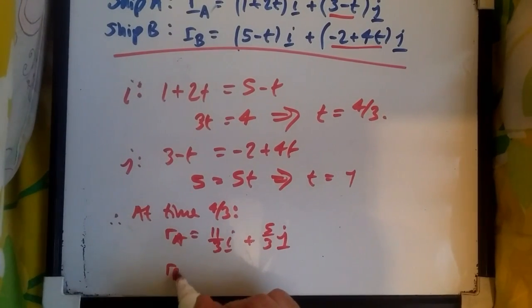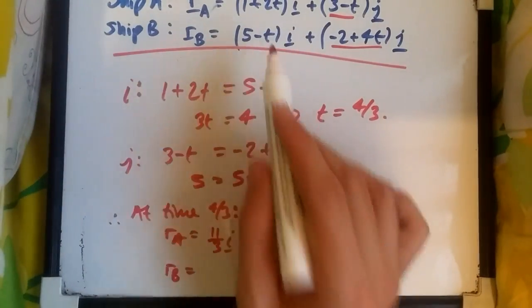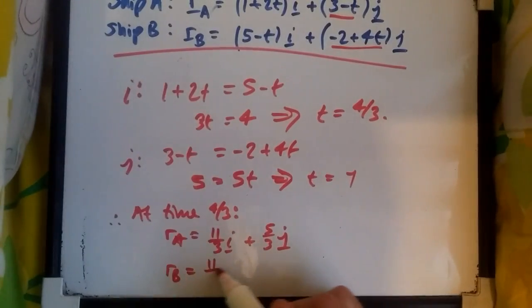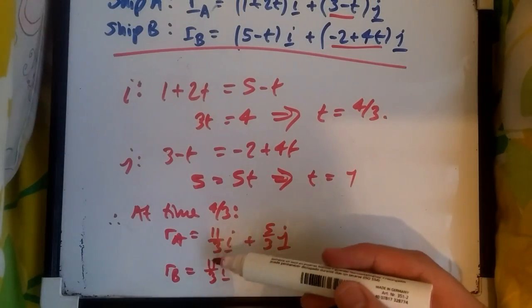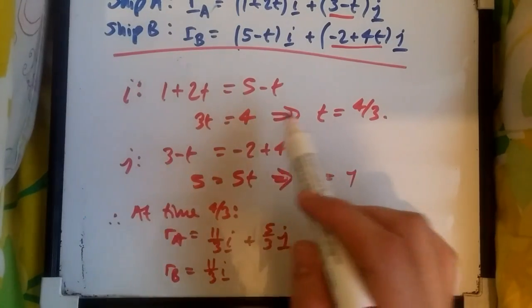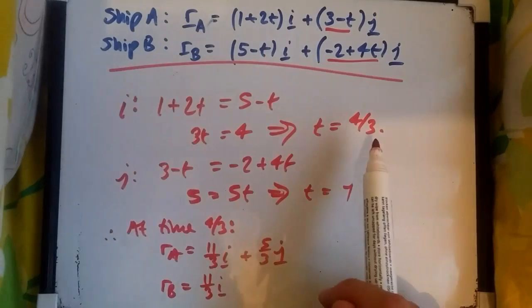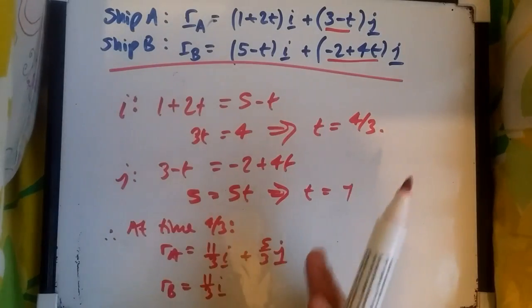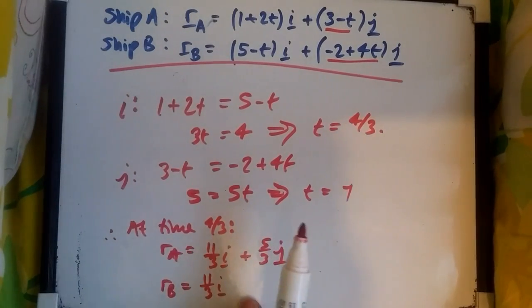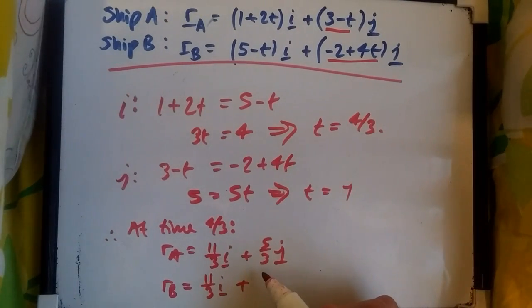At rB, where would it be at time 4/3? Putting 5 - 4/3 will give us 11/3. As you can see, this is what we're supposed to get - we're supposed to get the same value at the same time because we just matched these two equations. This tells us that at time 4/3, they'll be in the same x or i axis. In other words, they'll be in the same path on the map. Now they could be in a different location north and south, but we proved that because of this one. So what happens at time 4/3? For this one, at time 4/3, we should get 10/3 j.